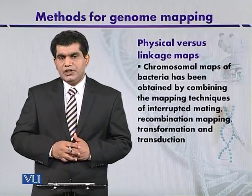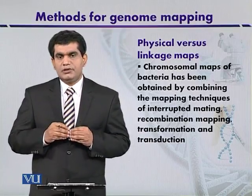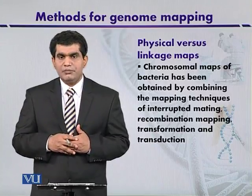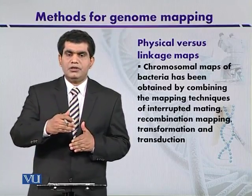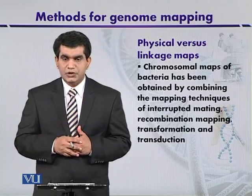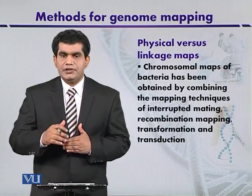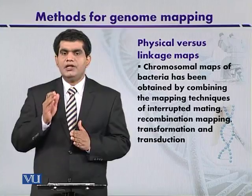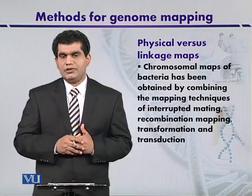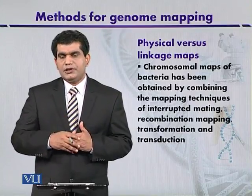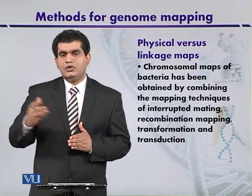Most of the maps developed for bacteria were based on interrupted mating. During the process of conjugation, DNA from the donor is transferred to the recipient through the formation of a conjugation tube. Scientists developed strategies by which they can interrupt this mating process after different time intervals.